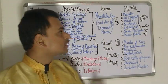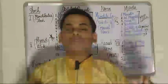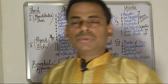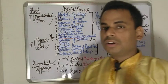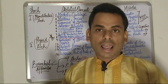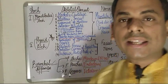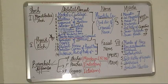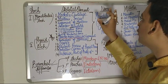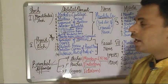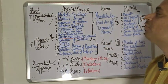Today I'll be focusing on the derivatives from the first arch and the second arch. It becomes very difficult to remember what the derivatives of each arch are. Each pharyngeal arch consists of a skeletal element, a striated muscle, a nerve, and an arterial arch. I'll be discussing these in the form of a simple mnemonic.